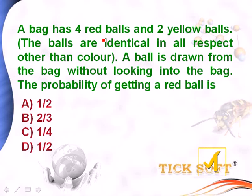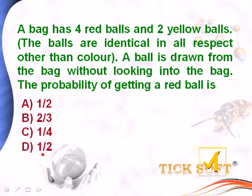The bag has four red balls and two yellow balls. The balls are identical in all respects other than color. A ball is drawn from the bag without looking into the bag. The probability of getting a red ball is: option a, 1 by 2; option b, 2 by 3; option c, 1 by 4; option d, 1 by 2.